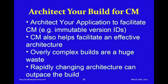You want to architect your build for configuration management — that means you architect your application to facilitate CM. You want to be able to put those immutable version IDs in there, and CM also helps facilitate an effective architecture. If you have good source code management practices in place, that helps your architecture team develop a better software systems architecture. Overly complex builds are horrible. I've had colleagues who were very smart create build frameworks that were pretty fancy, and in fact nobody understood what they were doing. So make sure you keep your builds really, really simple, and in this rapidly changing architecture, make sure you get a heads up so that you don't get caught off guard.